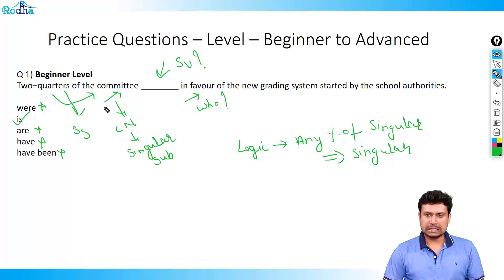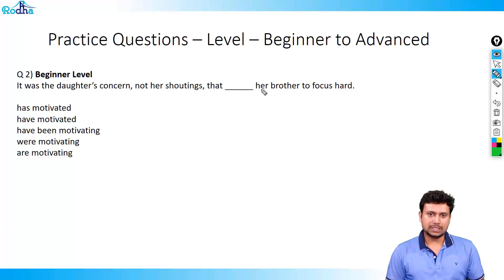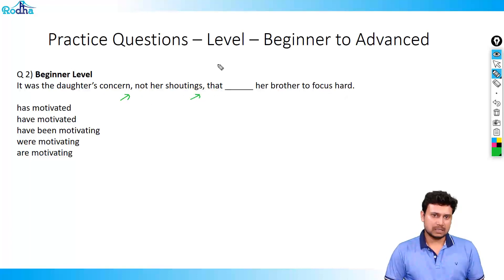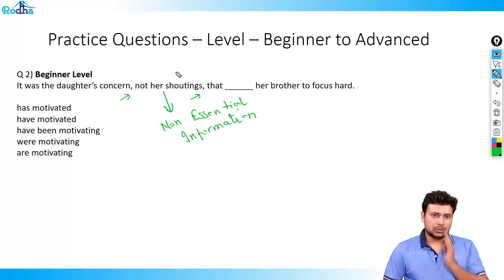I hope you have understood this. Let's move on to the next question. The next question is a nice question. It says: it was the daughter's concern, not her shoutings, that dash her brother to focus hard. Please pay attention here. When you have two commas separated by a sentence, typically that sentence acts as non-essential information, which means that part is not needed to solve the question. So the moment I realize it's non-essential information, I'll not even look at it.